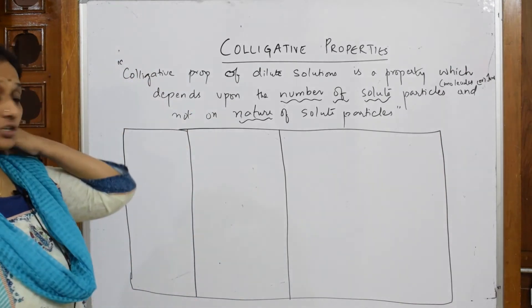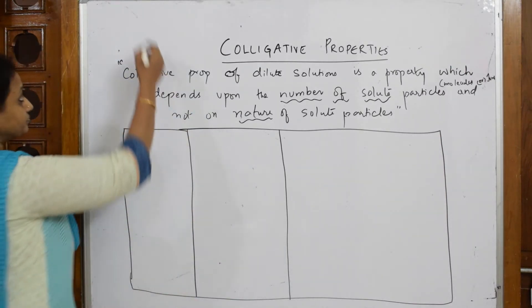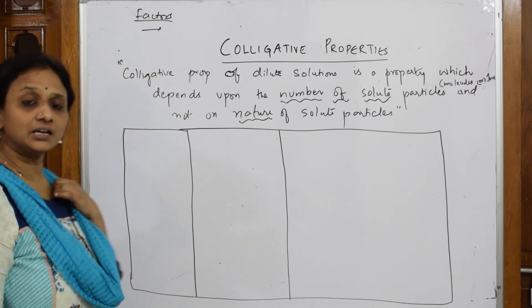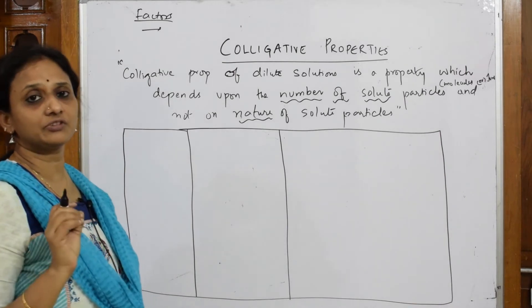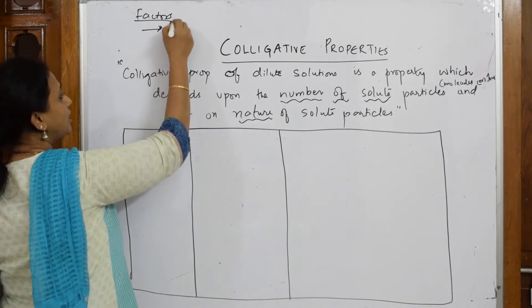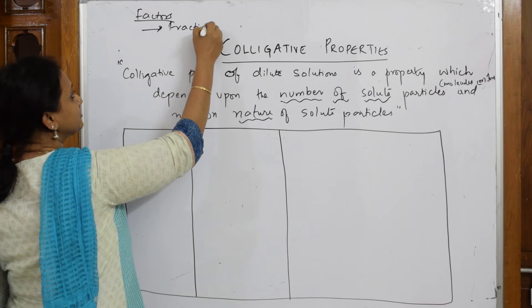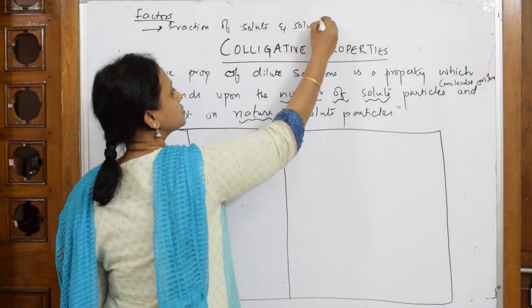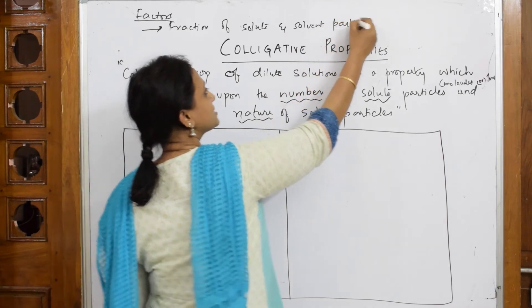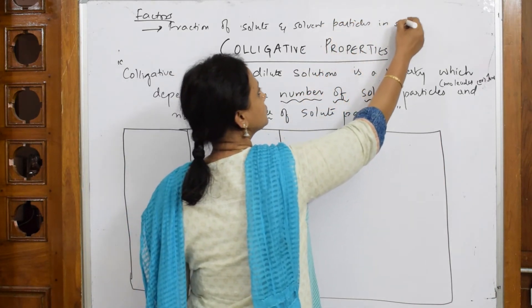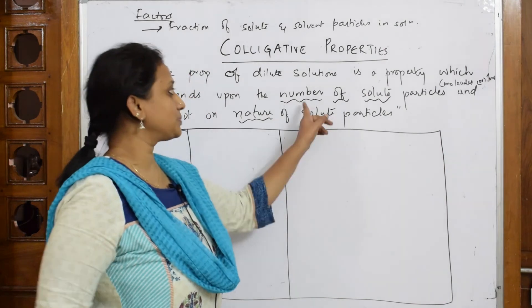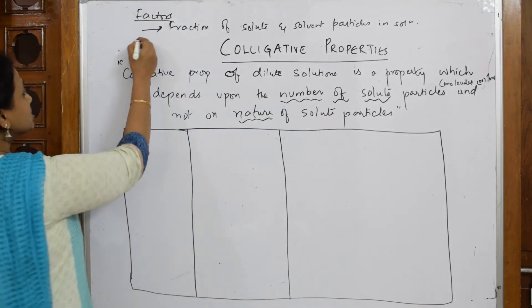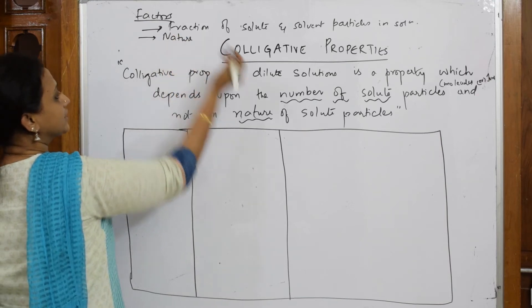So when I have to speak about the colligative property factors, first important thing: it's going to depend upon the fraction of solute and solvent particles—very important—how many are present, the fraction of solute and solvent particles which are present in solution. This is why we are going to speak about number, the fraction of solute or solvent.